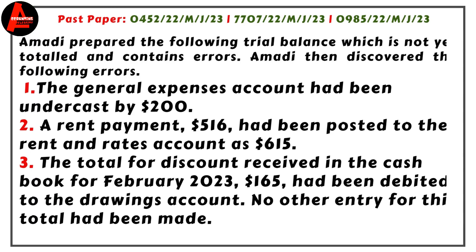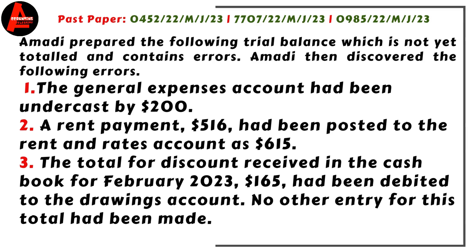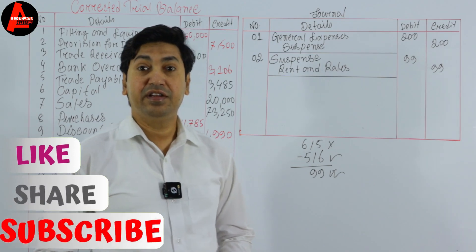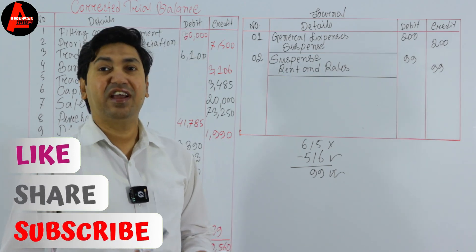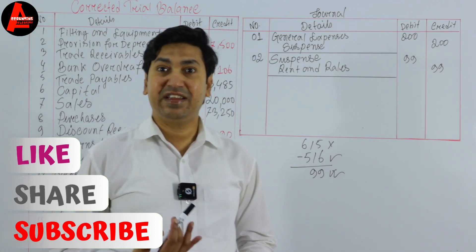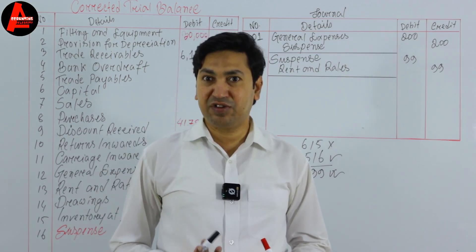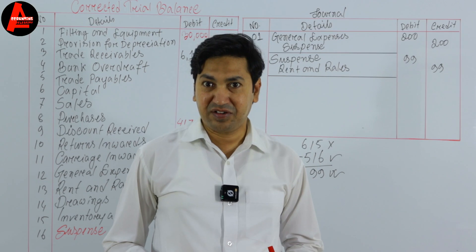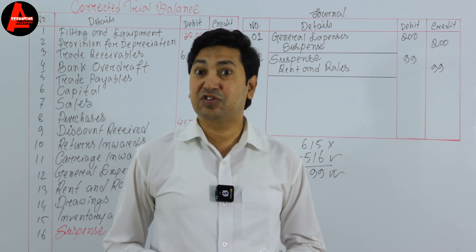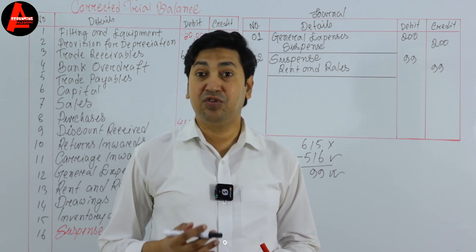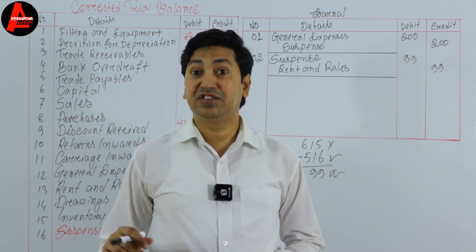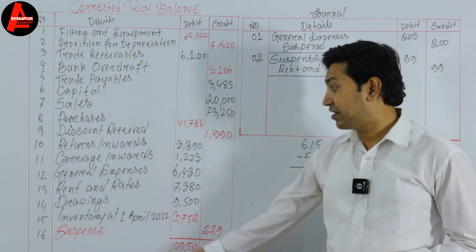Number three: the totals for discount received in the cash book for February 2023 — $165 — had been debited to the drawings account. No other entry for this total had been made. So discount received of $165 was mistakenly debited to the drawings account. To rectify, drawings will be credited. Discount received is an income account; income accounts are always credit accounts. So discount received will also be credited, and the debit account will be suspense.